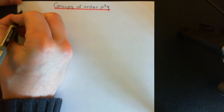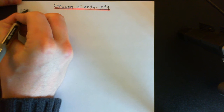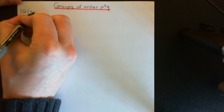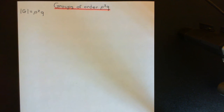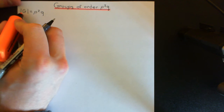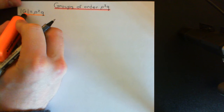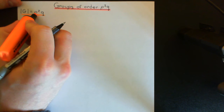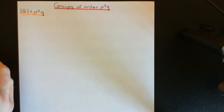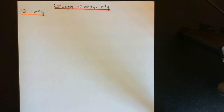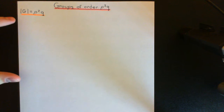Let me give you some examples to make this more concrete. We've got some finite group, which we'll call capital G, of order p squared q. Note that I'm not making any assumptions about which of the two primes, p or q, is larger. P could be smaller than q, or q could be smaller than p — it can be either way around.